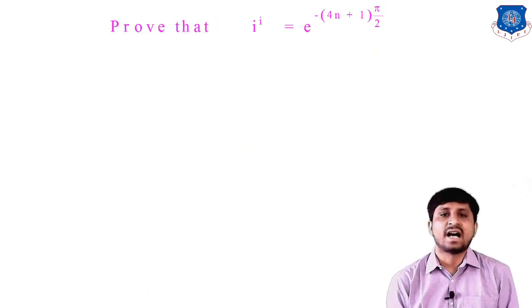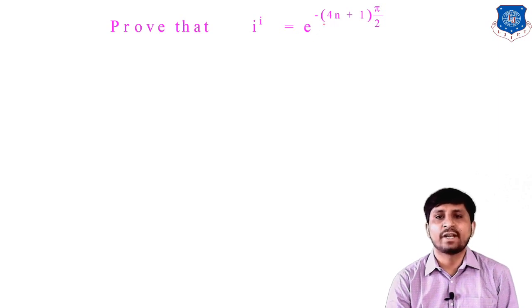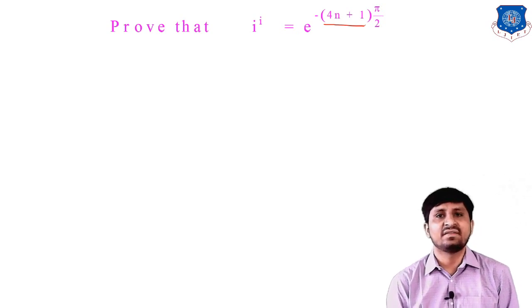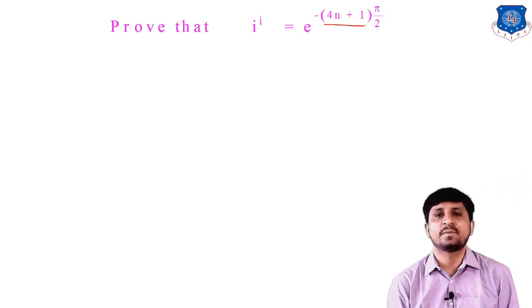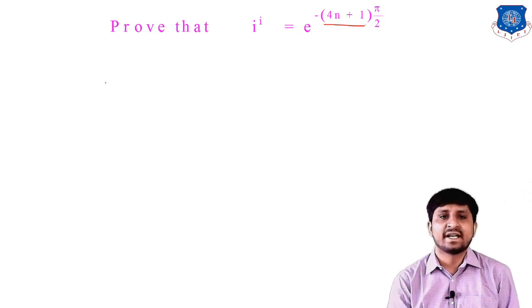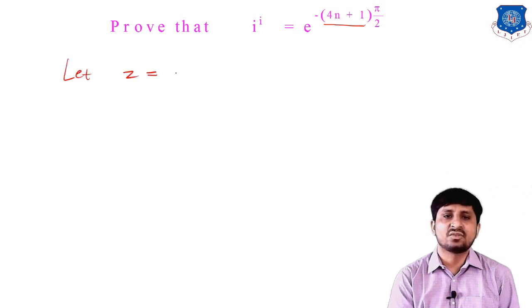Next, prove that i^i = e^(-(4n+1)π/2). To prove this, we must use the general value, because otherwise we cannot obtain the 4n+1 term. The general value contains 2nπ, which is why it's needed. Let z = i^i and take log on both sides.